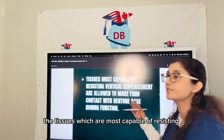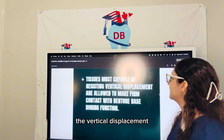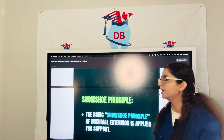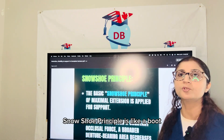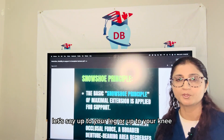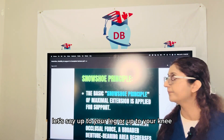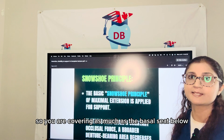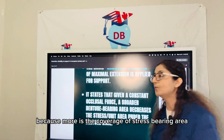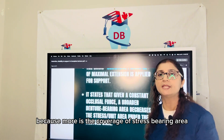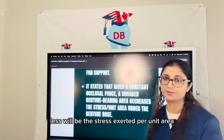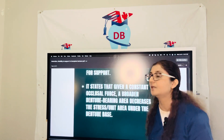The tissues most capable of resisting vertical displacement are allowed to make firm contact with the denture base during function. Finally, there is the snowshoe principle — like a boot that covers not just your foot but up to your leg or knee, you cover as much basal seat as possible to give maximum coverage and maximum support. More coverage of the denture bearing area means less stress exerted per unit area.